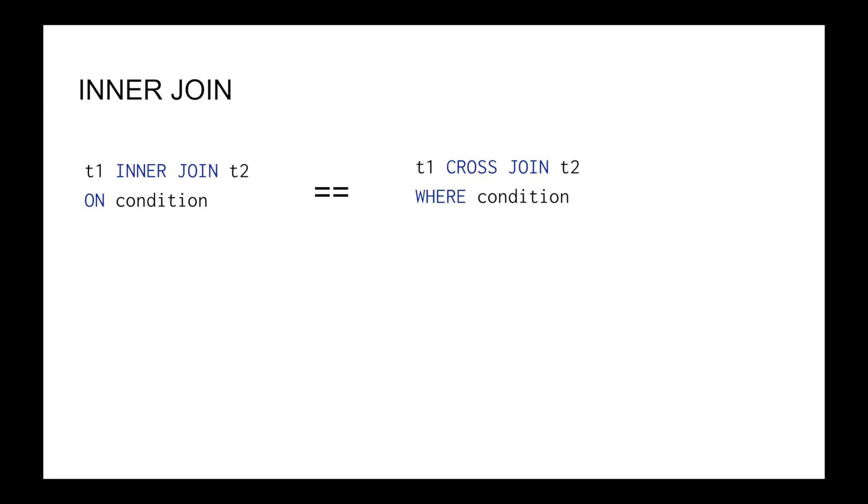Inner join is the same as cross join, but the result is filtered by some additional condition written in the ON clause. Look at this screen. These expressions are absolutely equivalent.